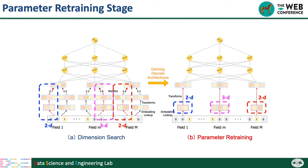After the search model converges, we go to the parameter retraining stage. According to the well-learned weights on candidate embeddings, we can select the optimal embedding dimension for each feature field and retrain the model parameters. Next, I will introduce how we design the two-stage framework one by one.